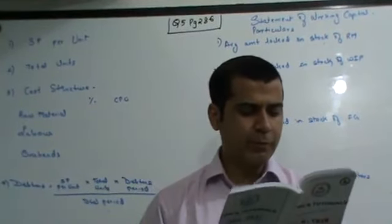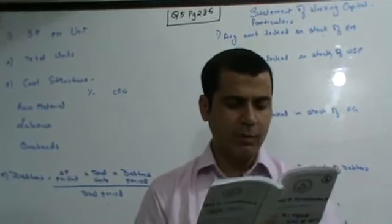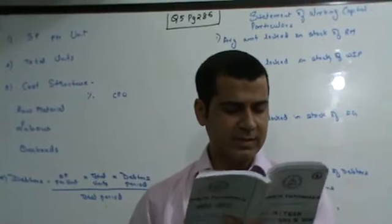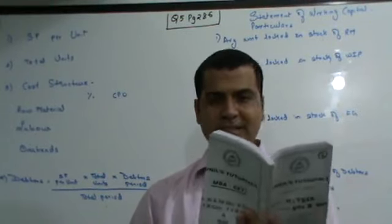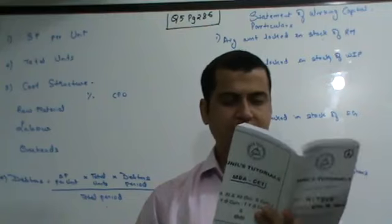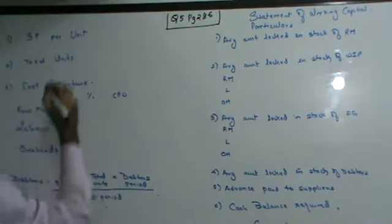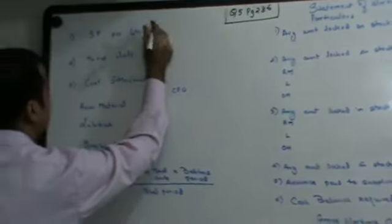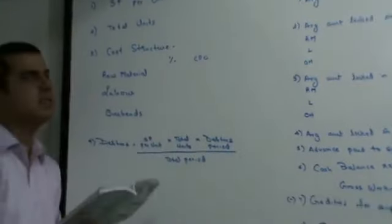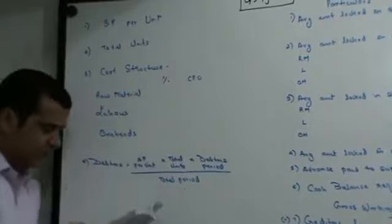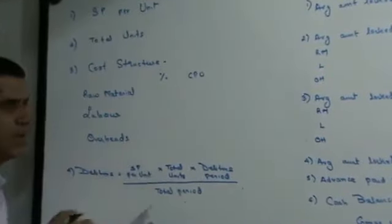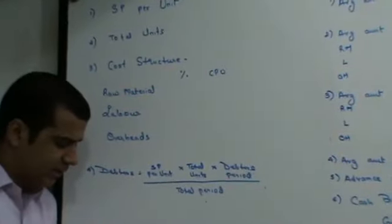They have given you that the projected profit and loss account for the year 2005-2006 is as under. However, sales is given to you as 36,50,000. They have given you instead of selling price per unit, they have given you that the total sales is 36,50,000.